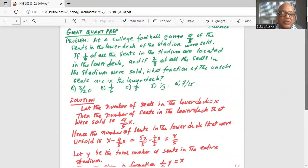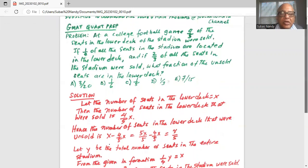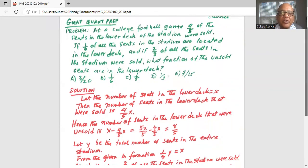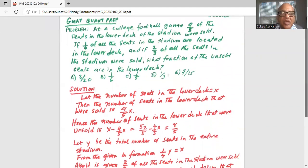So let the number of seats in the lower deck be x. Then the number of seats in the lower deck that were sold is four-fifths x. Hence the number of seats in the lower deck that were unsold is x minus four over five x. Now x can be written as five x divided by five, so it's five x by five minus four x by five which is x over five.